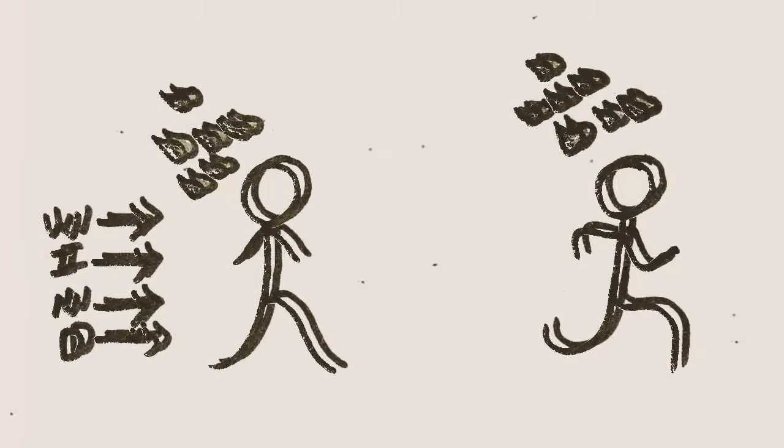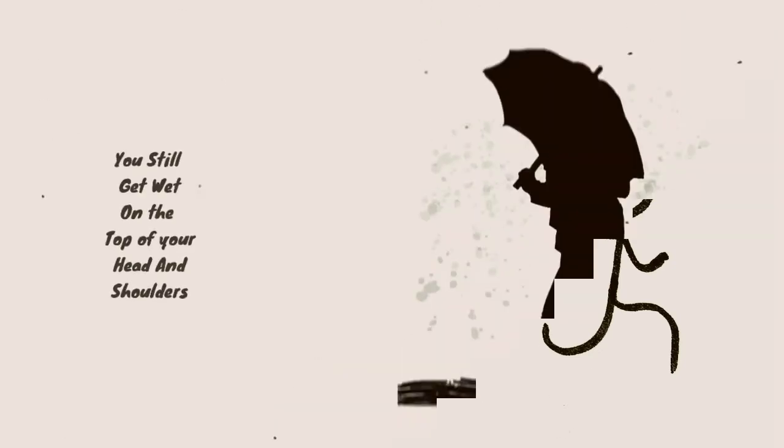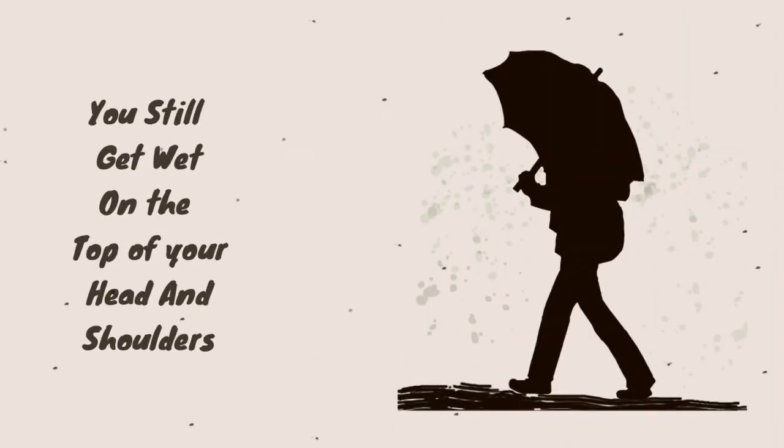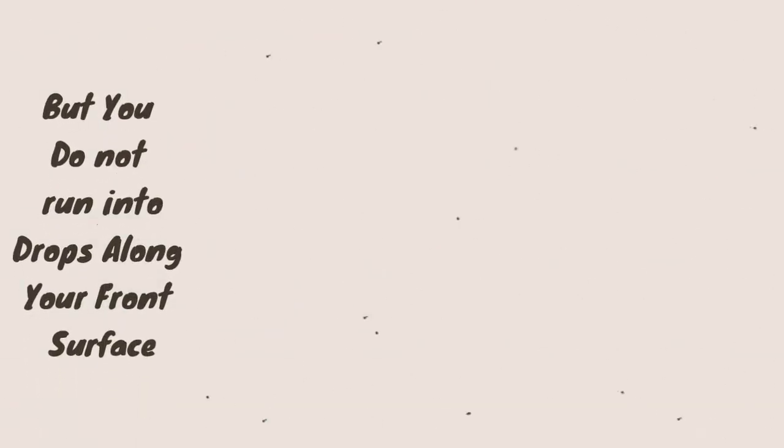And what if the wind is at your back? The best strategy is to run at a speed that matches the horizontal speed of the falling raindrops. In that way, you still get wet on the top of your head and shoulders, but you do not run into drops along your front surface.